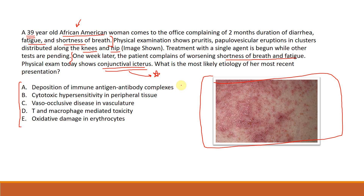When looking through answer choices, I first eliminate ones clearly describing something else. In tests like UWorld, each answer choice classically describes one disease entity. Since we're thinking celiac disease, answers that don't fit can be eliminated. To sum it up: she has celiac disease, was treated with dapsone, which blocks myeloperoxidase, and one week later presents with worsening anemia — suggesting a hemolytic process.